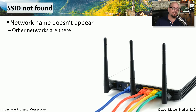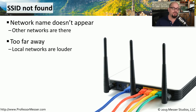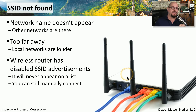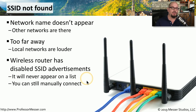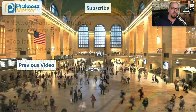If you bring up a list of all wireless networks in your area and your network is not appearing, there may be a couple of reasons. One is that your access point is too far away and its signal isn't reaching your workstation. Another is that your access point has been configured to not show itself in the list — this is called disabling SSID advertisements. If those are disabled, the network will never appear in the available networks list. Your wireless network is still available, but you'll have to manually type in the SSID to connect to it.